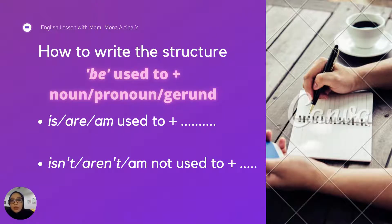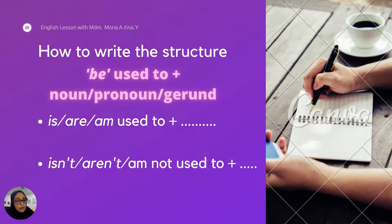Now let's take a look at the structure be used to, followed by a noun, a pronoun, or a gerund. We have positive form and also negative form. The positive is: is or am followed by used to. And for the negative form, we simply put the word not in - isn't, aren't, am not used to. So those are the positive and negative forms of be used to.